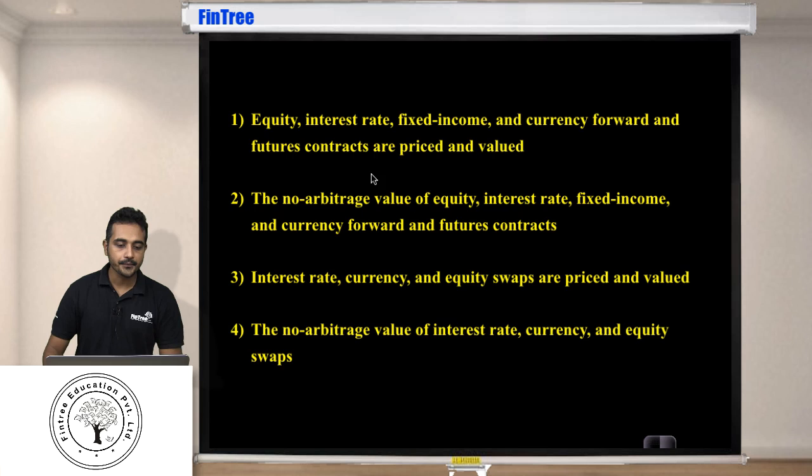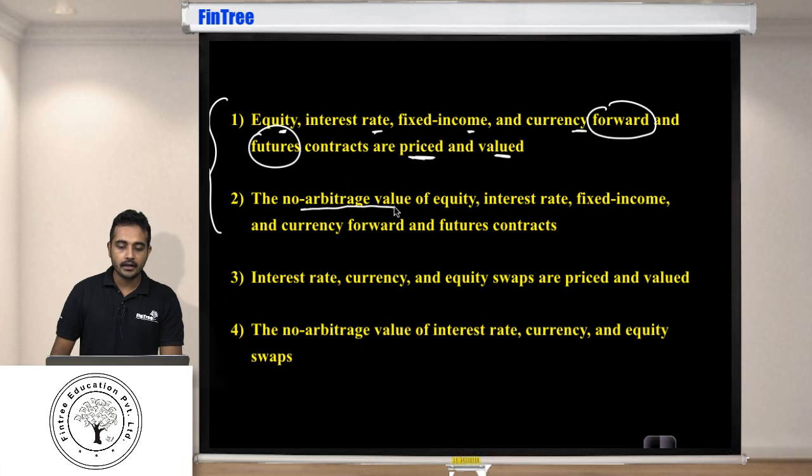These are the learning outcomes. The first two are more or less the same, so I'm going to combine them. It says equity, interest rate, fixed income and currency forward and future, how they are priced and how they are valued. This is no arbitrage value, which is going to be similar to how we typically price them or how we typically value them.